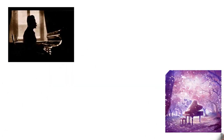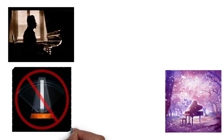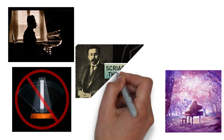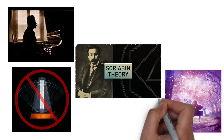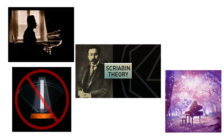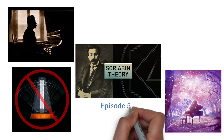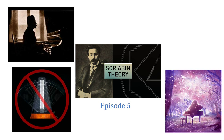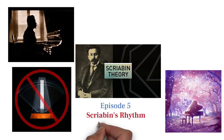Scriabin creates ethereal textures by writing rhythms that obscure the beat. In this episode of Scriabin Theory, we'll discuss various rhythmic techniques Scriabin used to create his uniquely dense textures.